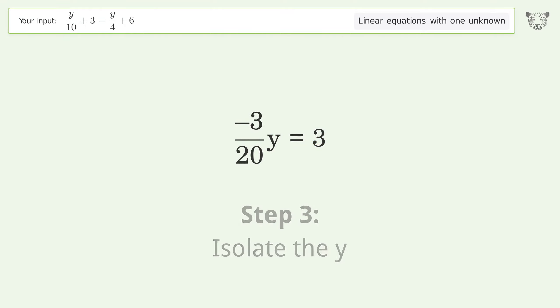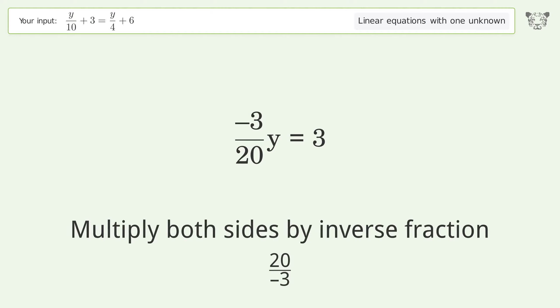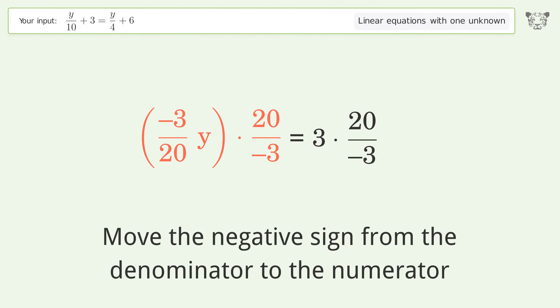Isolate the y. Multiply both sides by the inverse fraction 20 over negative 3. Move the negative sign from the denominator to the numerator.